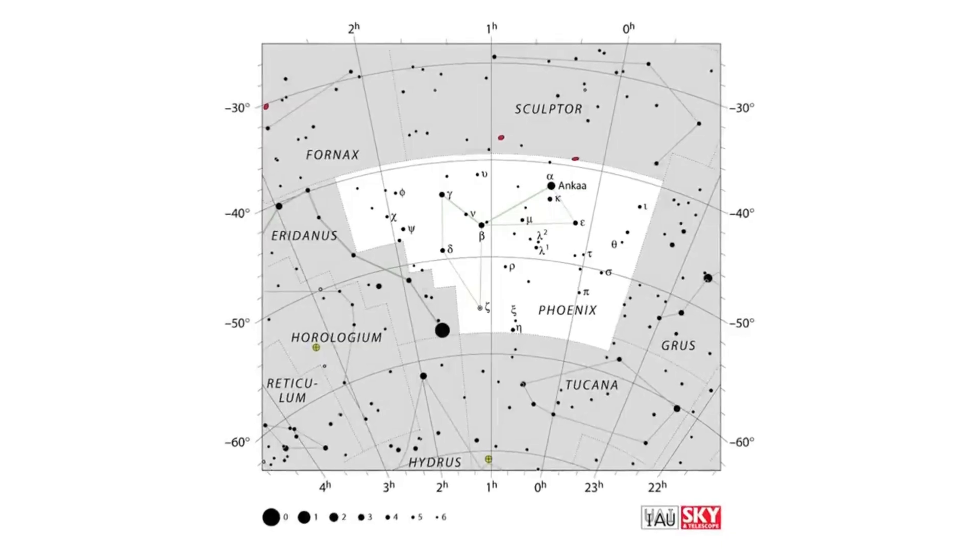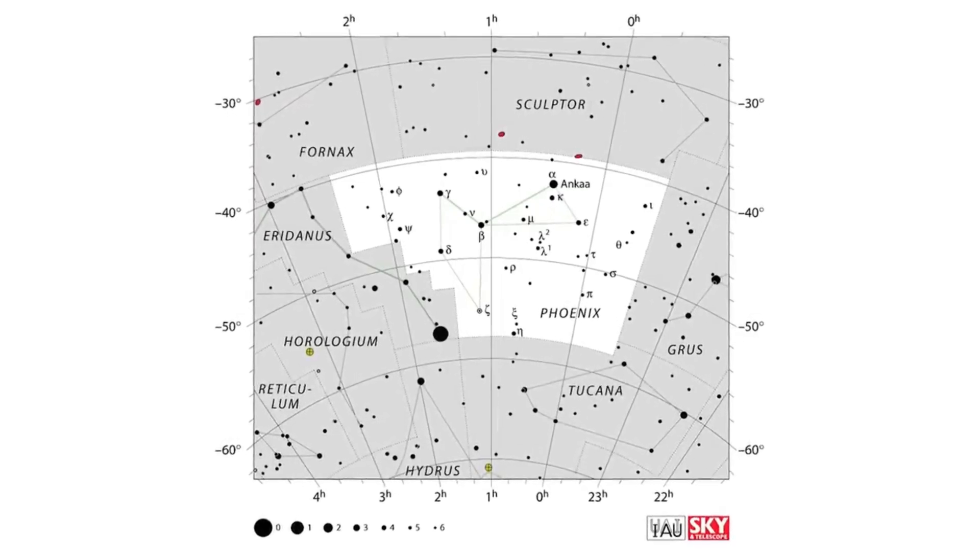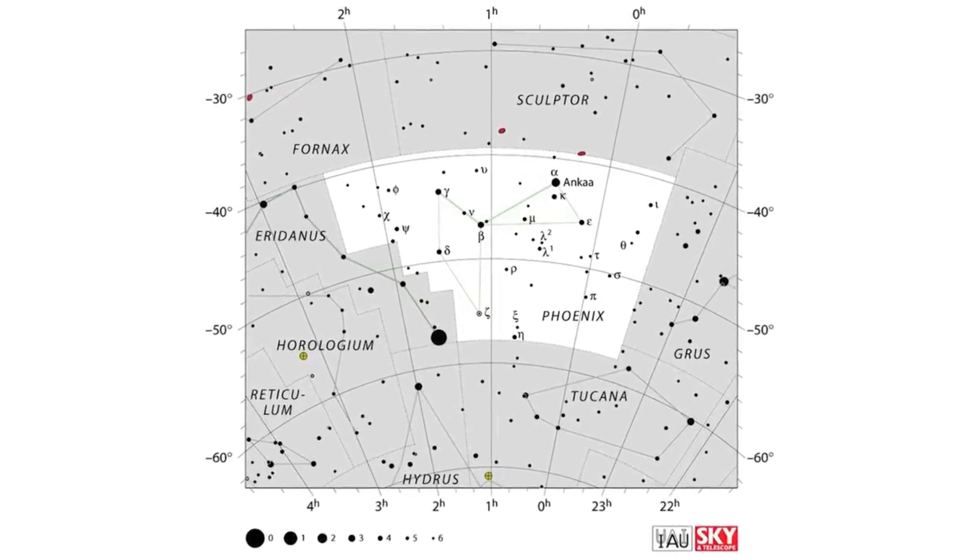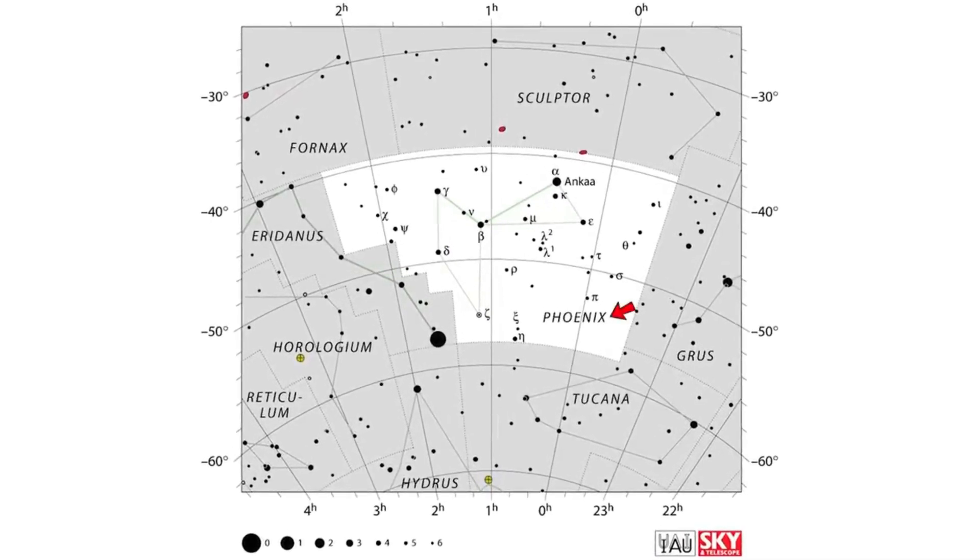Now, returning to the main content, about 8.57 billion light-years away in the southern constellation of Phoenix, there is the Phoenix Cluster.